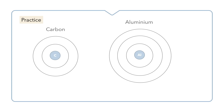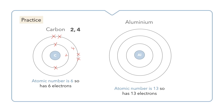Here we have two more examples: carbon and aluminium. Carbon has an atomic number of six, so we have six electrons. We start by placing two in the first shell, which leaves a remainder of four electrons. We place those in the second shell, giving us two in the first shell and four in the second shell. The electron configuration of carbon is 2,4.